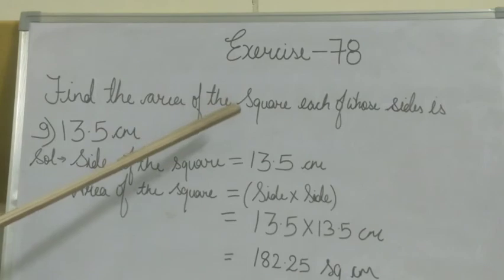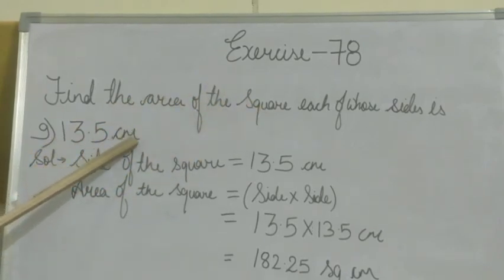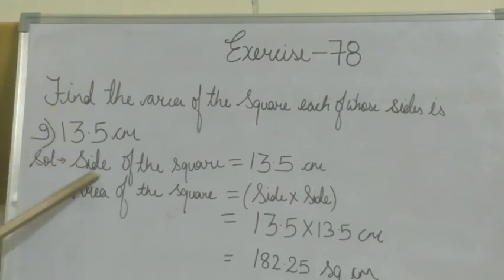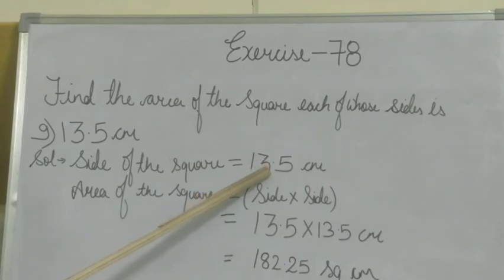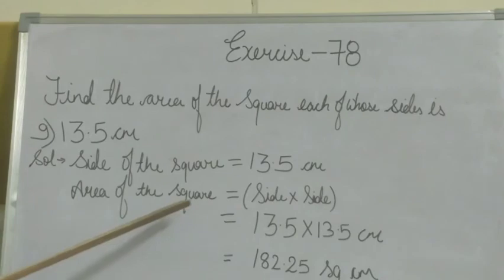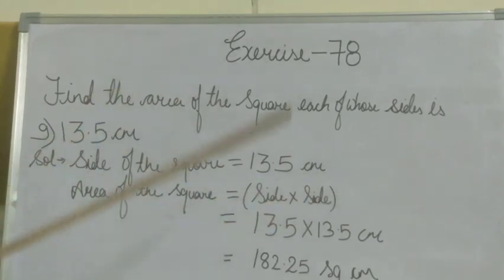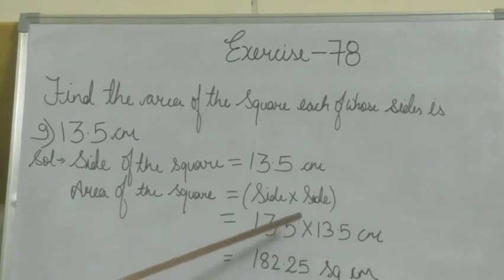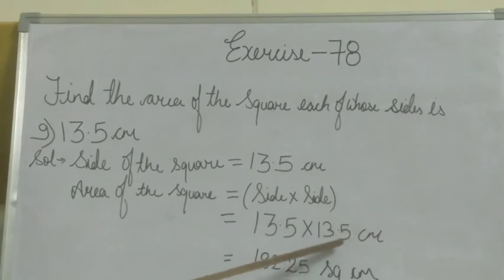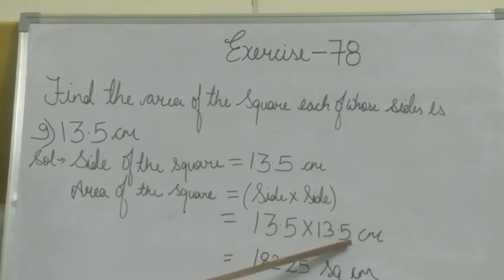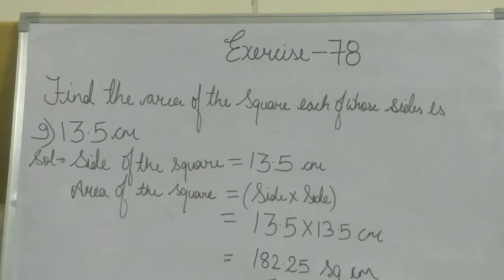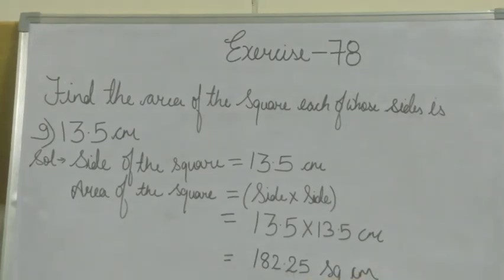Next question: find the area of a square where the side is 13.5 cm. Now solve this question. The side of the square is 13.5 cm. The area of a square equals side into side. So we calculate 13.5 multiplied by 13.5. When we multiply both numbers, we get 182.25. Hence, the area of the square is 182.25 cm².